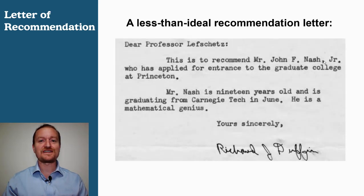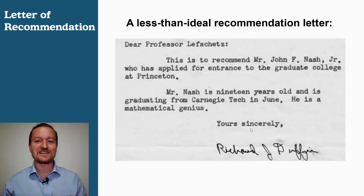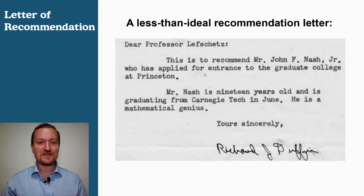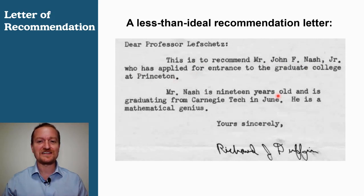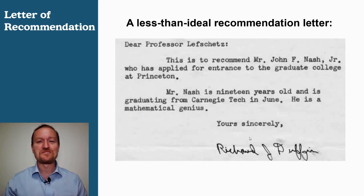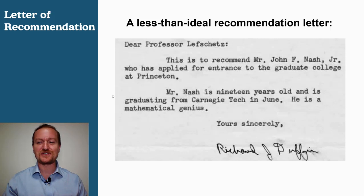Let's first look at a less-than-ideal recommendation letter, which was written for John Nash, the famous mathematician. This is not the kind of recommendation letter you want — it's obviously too short. The referee simply says, 'This is to recommend John Nash Jr., who has applied for entrance at Princeton. He is 19 years old, he's graduating, and he's a genius.' So unless you have a letter from an extremely distinguished professor, you probably want a little bit more detail than this.